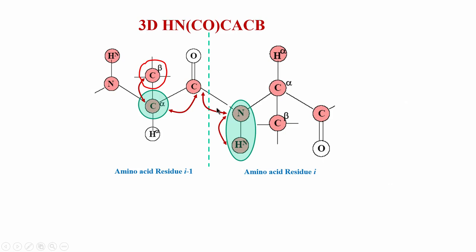We saw that it goes through CO, but actually it does not collect the chemical shift of CO. So it is using CO as a relay station — using it to go from one nucleus to another nucleus — but not using it for any chemical shift information. That is why we put CO in brackets, which is the nomenclature we have been using for triple resonance experiments.